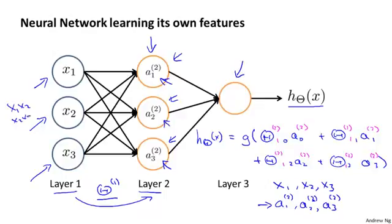But instead, this algorithm has the flexibility to try to learn whatever features it wants using these a1, a2, a3, in order to feed into this last unit that's essentially a logistic regression unit. I realize this example is described at a somewhat high level, and so I'm not sure if this intuition of the neural network having more complex features will quite make sense yet. But if it doesn't yet, in the next two videos, I'm going to go through a specific example of how a neural network can use this hidden layer to compute more complex features to feed into this final output layer and how that can learn more complex hypotheses. So in case what I'm saying here doesn't quite make sense, stick with me for the next two videos, and hopefully after working through those examples, this explanation will make a little bit more sense.